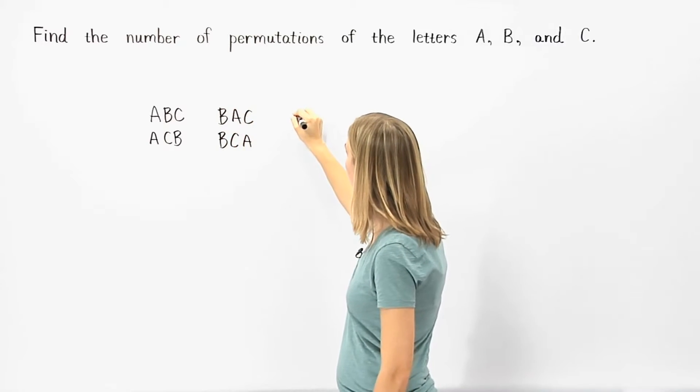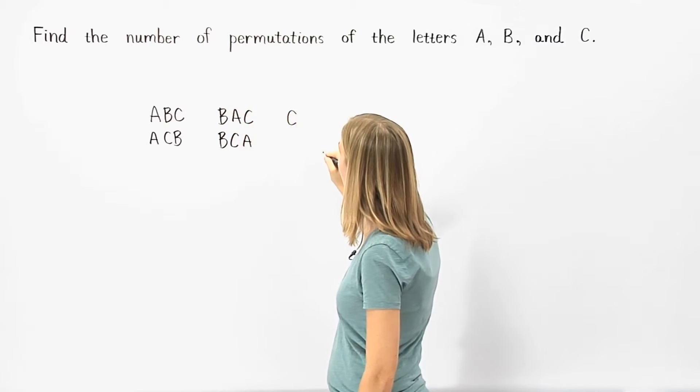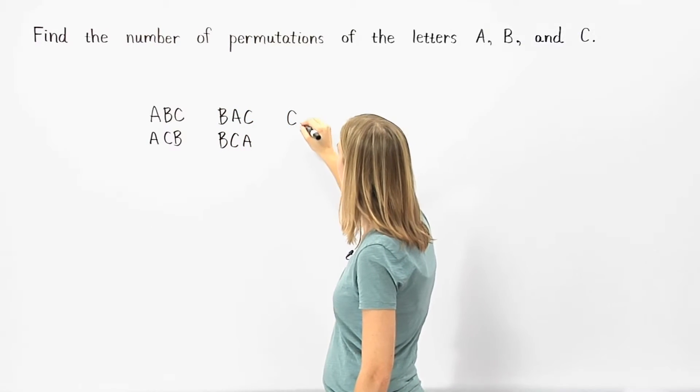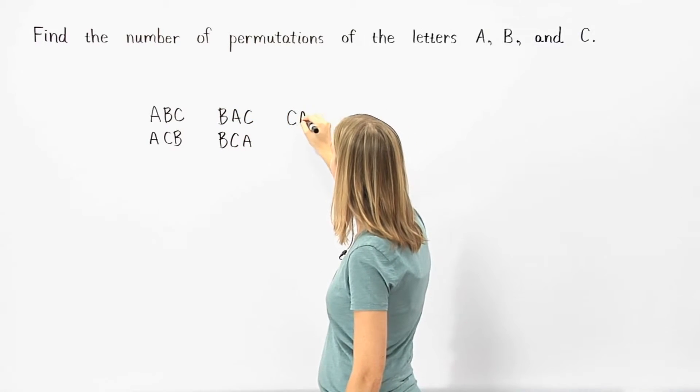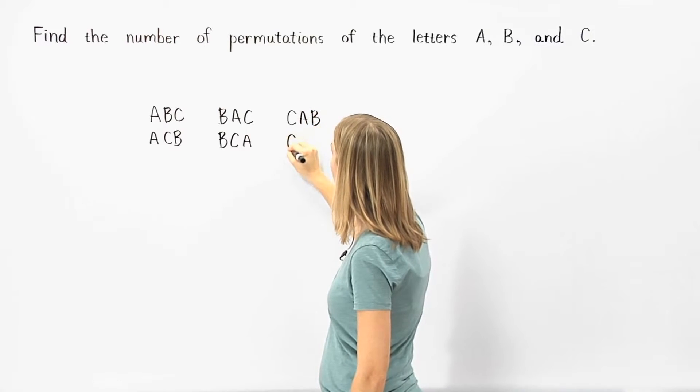And if we start with the letter C, we can arrange the letters as C, A, B or C, B, A.